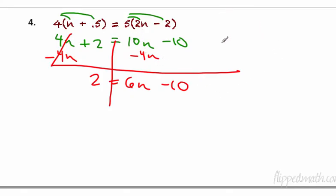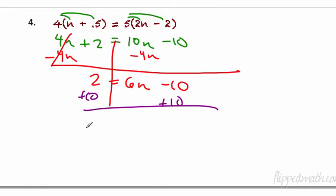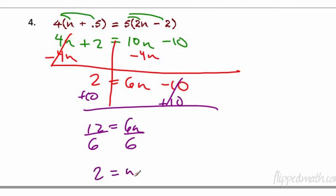Back to the equation: we have 2 equals 6n minus 10. Get rid of that minus 10 — add 10 to both sides. Draw the line. 2 plus 10 is 12, equals 6n, and those cancel. So it's 6 times n — divide by 6. We get 2 equals n, or n equals 2.